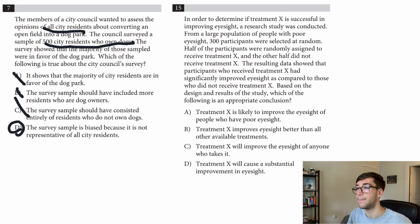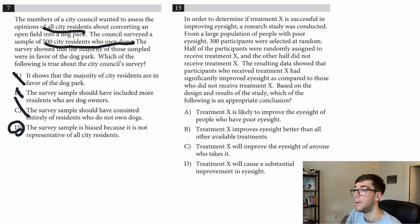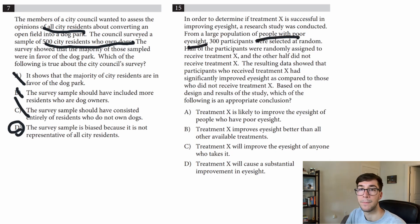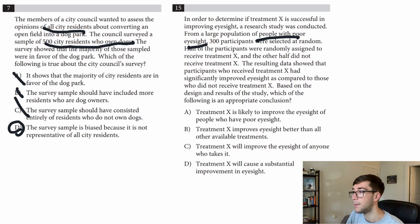Let's try the next question: 'In order to determine if treatment X is successful in improving eyesight, a research study was conducted from a large population of people with poor eyesight.' So the sample is people with poor eyesight, meaning we can only apply these results to people with poor eyesight. 300 participants were selected at random.